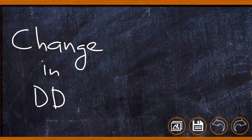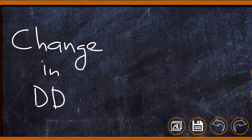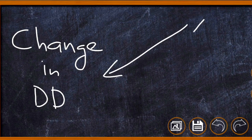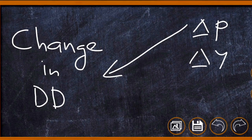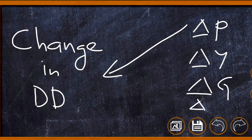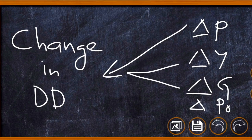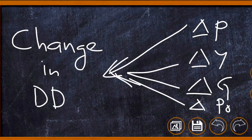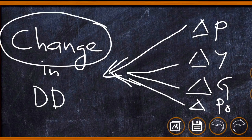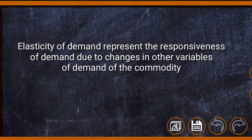There are various types of elasticity. The change in demand may happen due to change in price of the commodity, change in income of the consumer, change in government policy, or change in price of other commodity. All these variables affect the quantity demanded. Therefore, it is necessary to measure the effect of change in demand due to change in variables such as price, income, government policy, and price of other commodity. Elasticity of demand shows the responsiveness of demand due to a change in other variables.